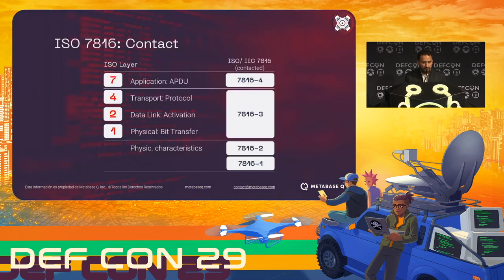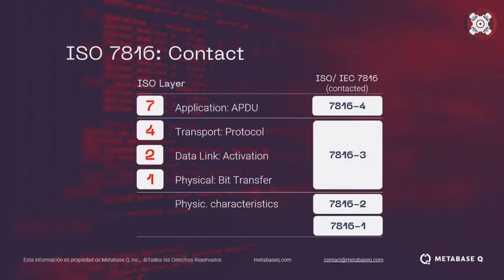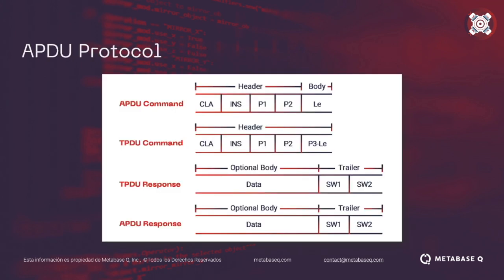The protocol for this communication is ISO 7016, for contact technology. One of the most important is the application APDU layer, which is basically how they interact with each other in this communication process. To understand this communication they need to follow a specific format, implementing APDU commands and APDU responses. We have the class, the instruction, parameter one, parameter two, and the body of the data. Then we have the APDU response from the card — which is the data and the trailer. The trailer basically is the status of the previous command, whether it executed correctly or not.